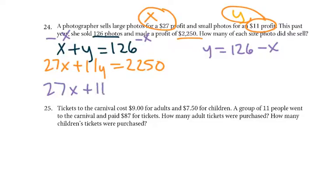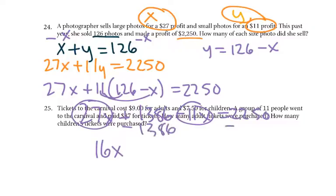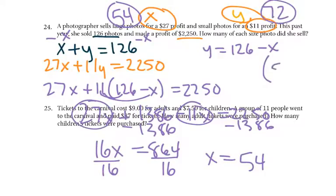So I'd get 27x plus 11 times (126 minus x) equals 2,250. That gives 27x plus 1,386 minus 11x equals 2,250. 27 minus 11 would be 16x. Subtract 1,386: 2,250 minus 1,386 gives us 864. Divide by 16, and we get x equals 54. So we sold 54 large photos. If we sold 54 large ones, 126 minus 54 tells us we sold 72 small ones. As a coordinate it would be (54, 72) — 54 large photos and 72 small photos.